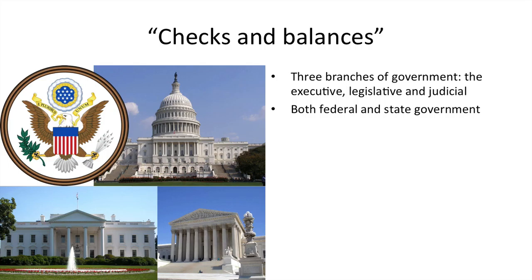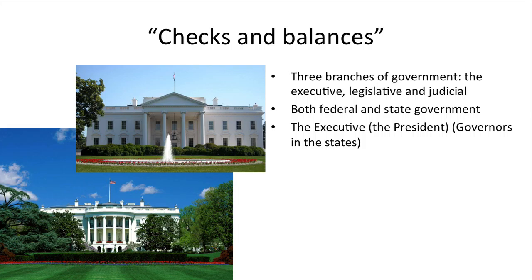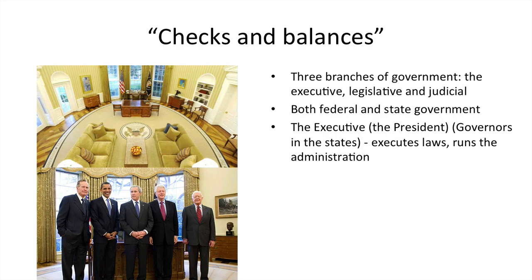All 50 states have their executive, legislative, and judicial branches as well. The executive, on the federal level, is the president. Here are pictures of both the front and the back of the White House, where the president lives, so he is the executive branch of government. For the 50 states, they have governors who are kind of their president. The executive executes laws, puts laws into action, and runs the administration. Barack Obama's administration is called the Obama administration, and they run the country as the executive branch of government.